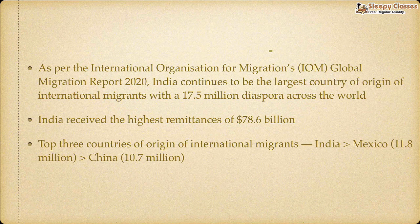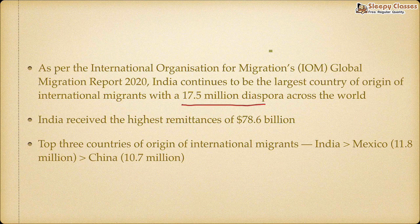India's diaspora number is 17.5 million and India receives approximately $78.6 billion as remittances, which is the largest in the world. Comparing the three countries: India has 17.5 million, Mexico is second with 11.8 million diaspora, and China has 10.7 million diaspora.